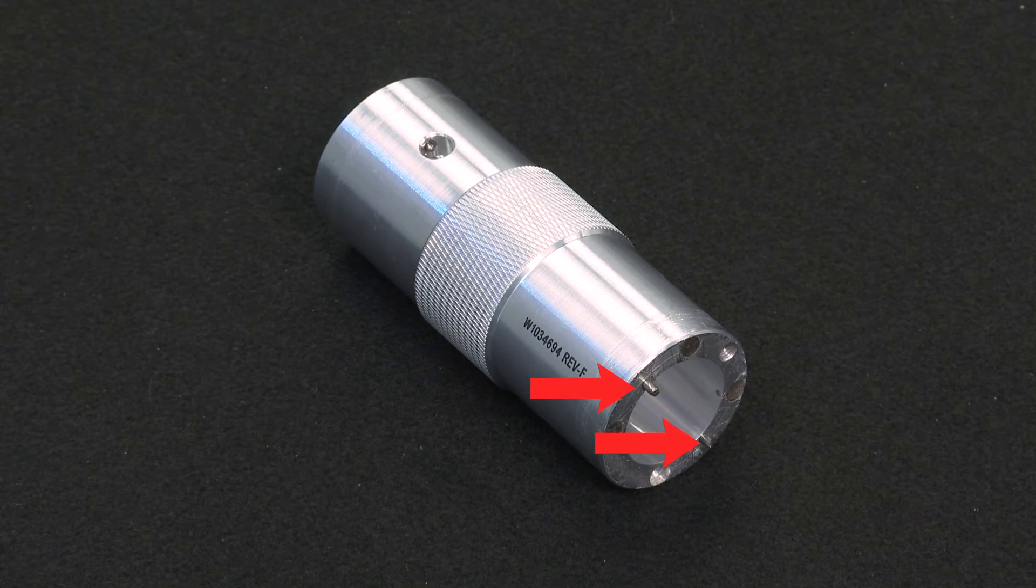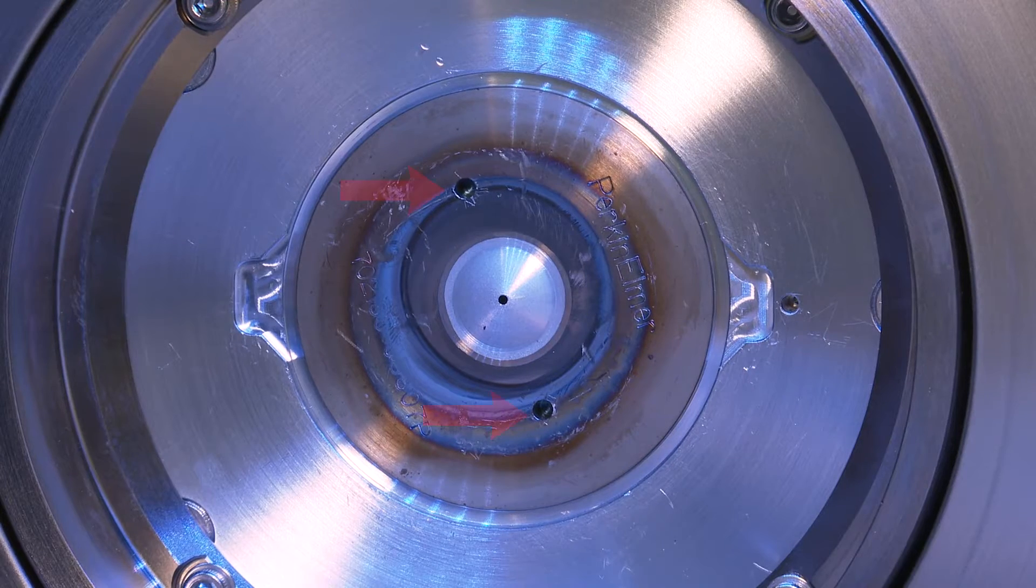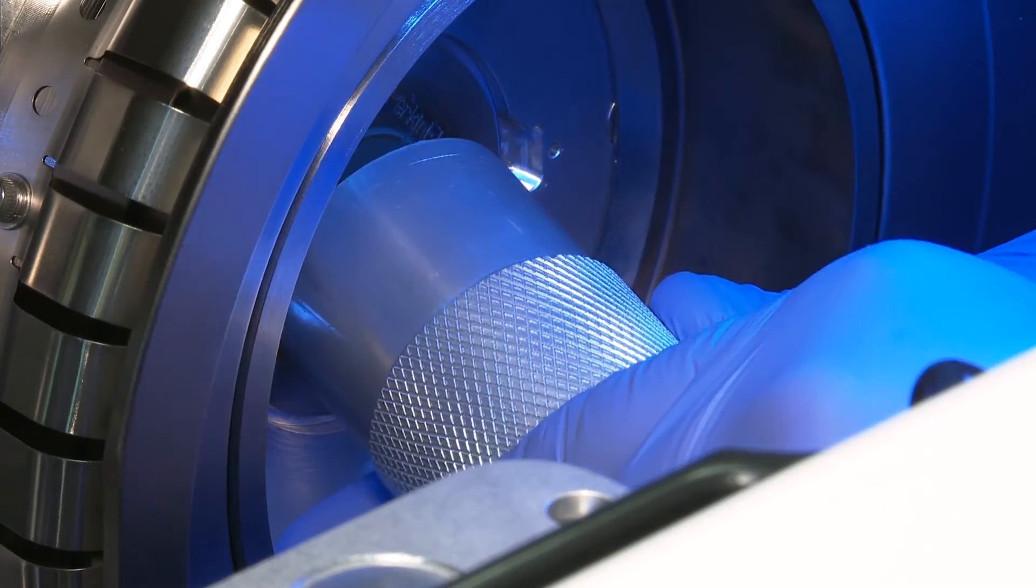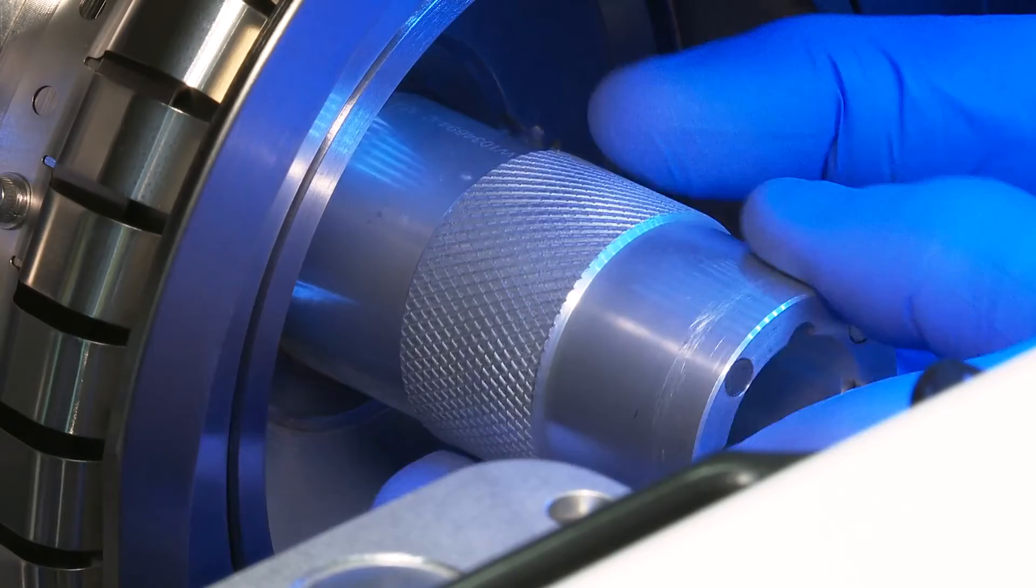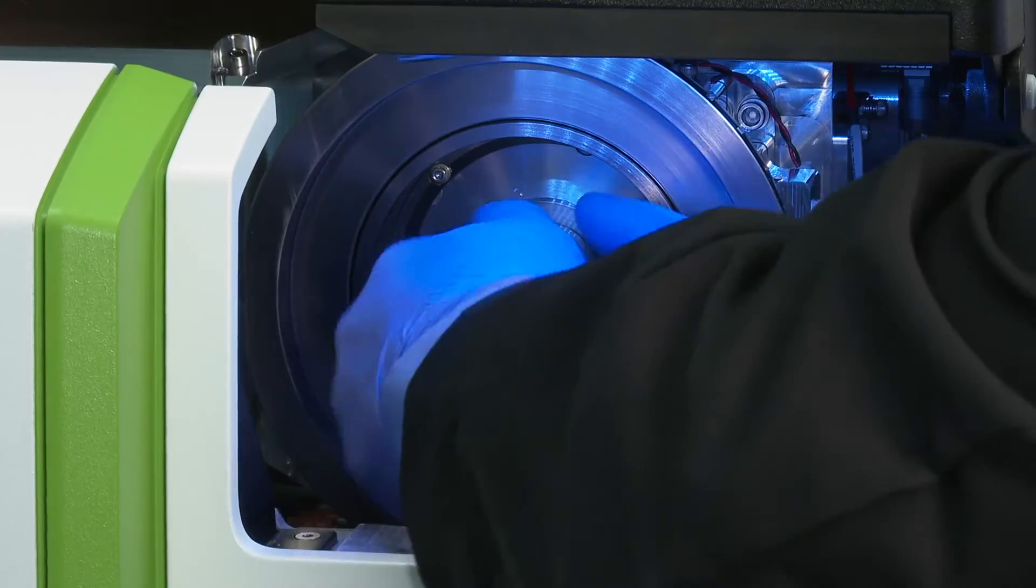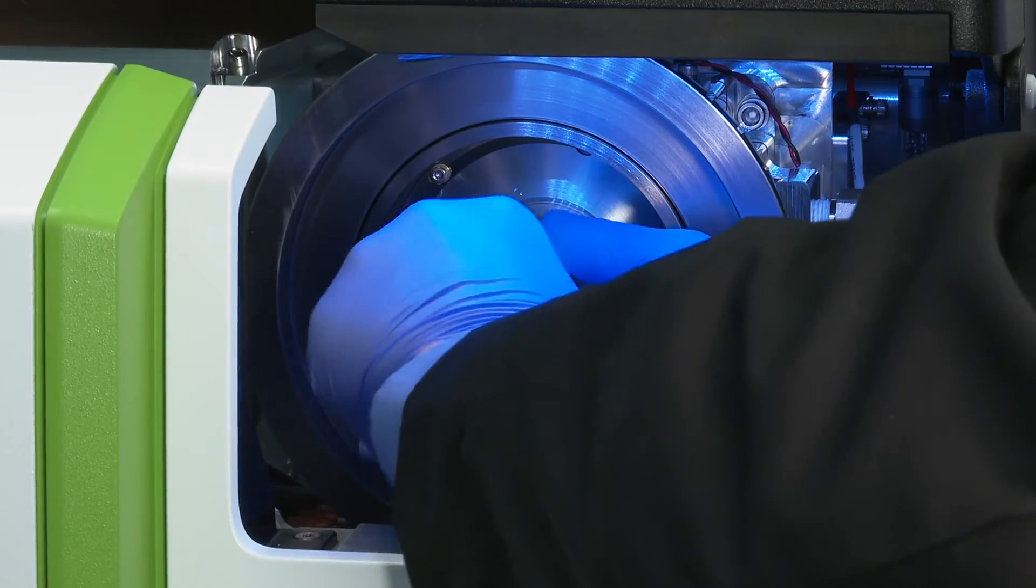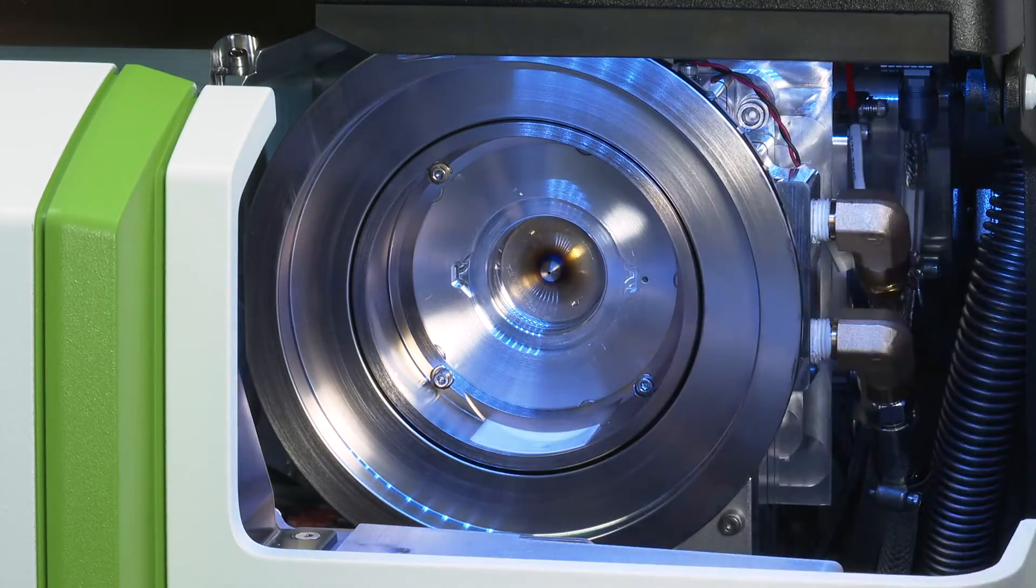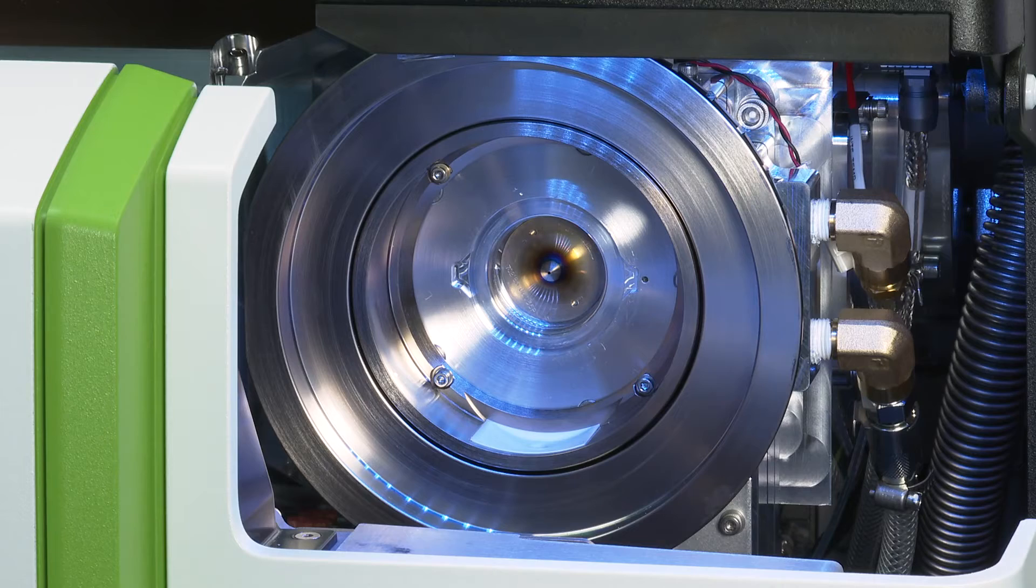Next, insert the pins on the cone removal tool into the holes on the sampler cone. Once the pins have engaged, the magnets will secure the cone to the tool. Unscrew the sampler cone by turning it counterclockwise. Place it on a clean working area and always handle cones by their edges.